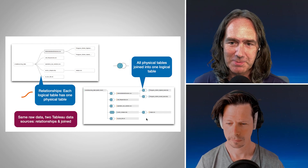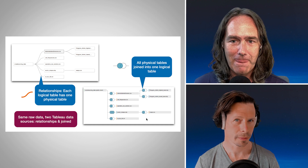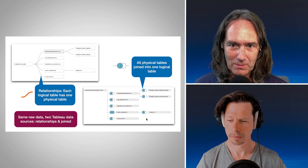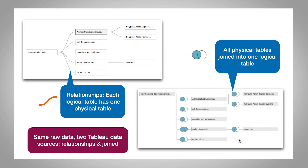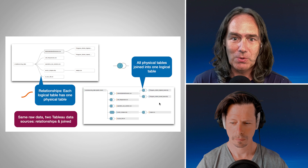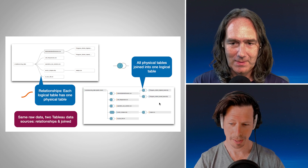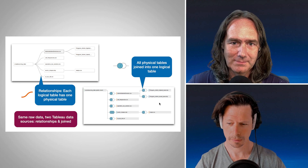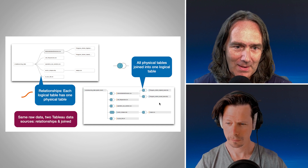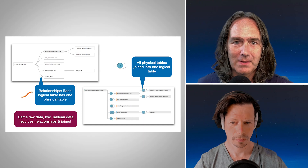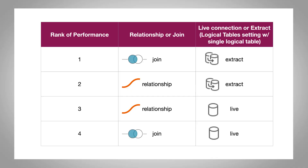This is kind of how we would have done things in the past without relationships. There are different file types here, so we're not necessarily going to get all the benefits of things like join culling. These are federated joins — they're not all happening inside of the database.